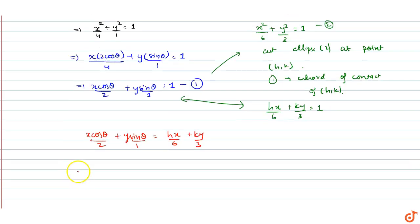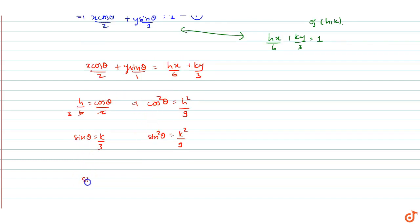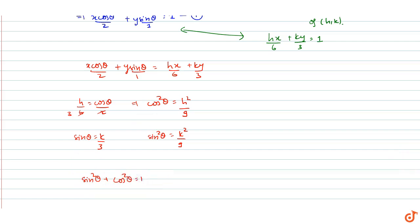On comparing coefficients, h/6 = cosθ/2, so cos²θ = h²/9. Similarly, sinθ = k/3, so sin²θ = k²/9. Adding both: sin²θ + cos²θ = 1, which gives h²/9 + k²/9 = 1, therefore h² + k² = 9.